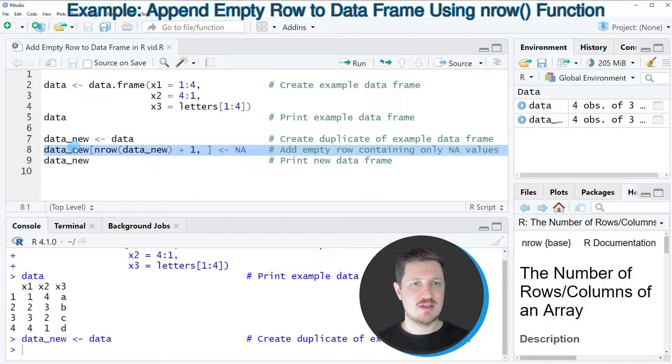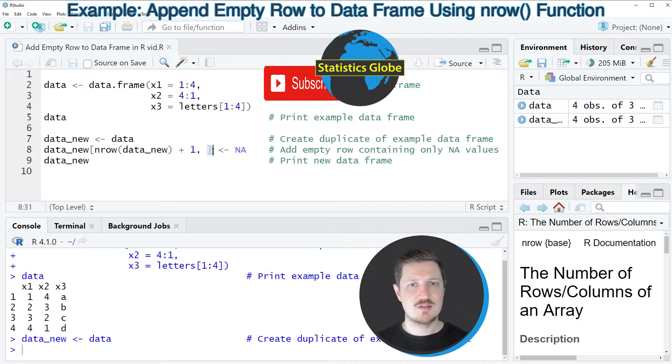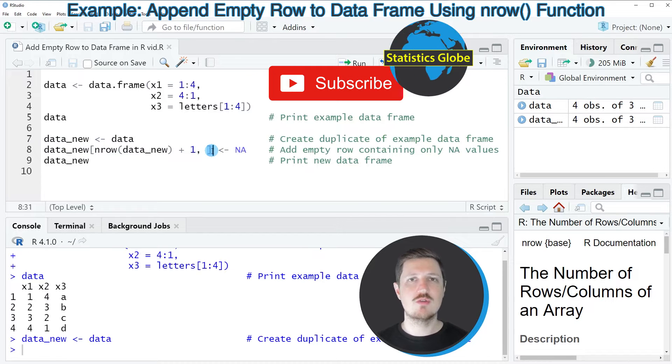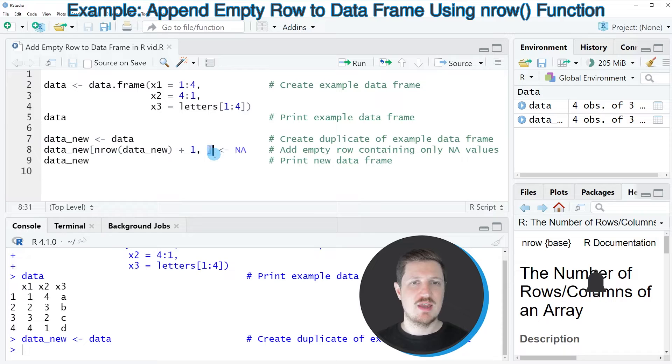Then in the next step, in line 8, I'm using square brackets to create a new row in our data frame. I'm adding this new row at the index position number of rows in our input data frame plus 1. In other words, at the bottom of our existing data frame. Then I'm using the assignment operator to assign to this row the value NA.